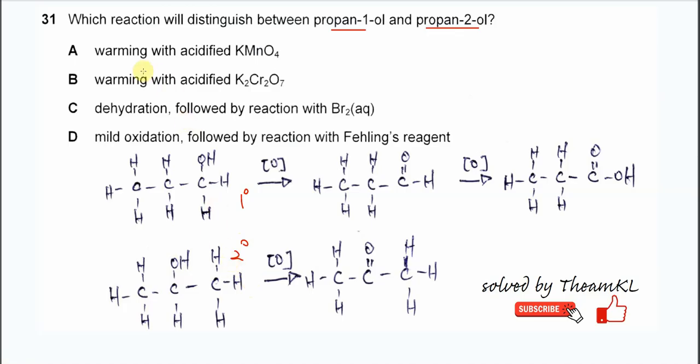Let's start with acidified KMnO4 and potassium dichromate, options A and B. Both are oxidizing agents. They will react with both primary and secondary alcohols, meaning both oxidizing agents will oxidize propan-1-ol and propan-2-ol. The KMnO4 will turn from purple to colorless, from positive 7 to positive 2.